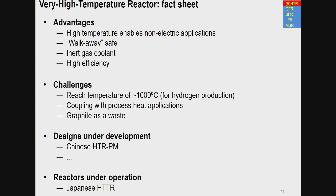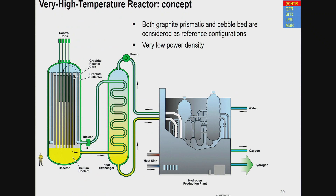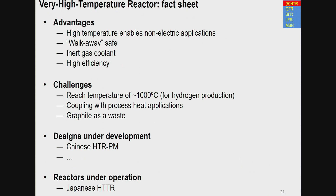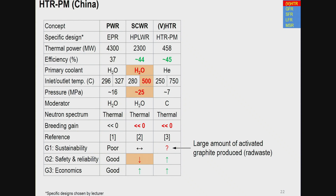VHTR challenges include achieving very high temperatures of 1000°C for hydrogen production via non-electric applications, coupling with process heat applications, and the fact that graphite becomes radioactive waste — the large amount of graphite irradiated during operation results in a large pile of irradiated waste at end of life. Designs under development include the Chinese HTR-PM. The reactor under operation is the Japanese HTTR.